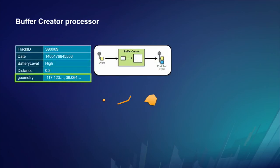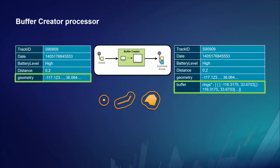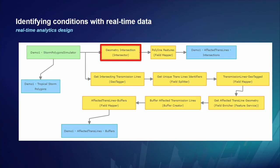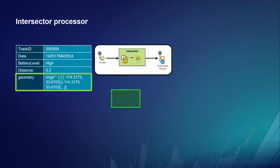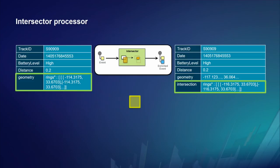In the buffer case, you receive a point, draw a buffer, and replace the point with the polygon to send it out to a stream service — which you then use to synchronize geo-fences. The geometry intersector, also shown in the demo, is a clip operation that generates a geometry representing the intersection between the event record's geometry and designated geo-fences. You can either enrich the event record with the result or replace the inbound geometry with what was produced.